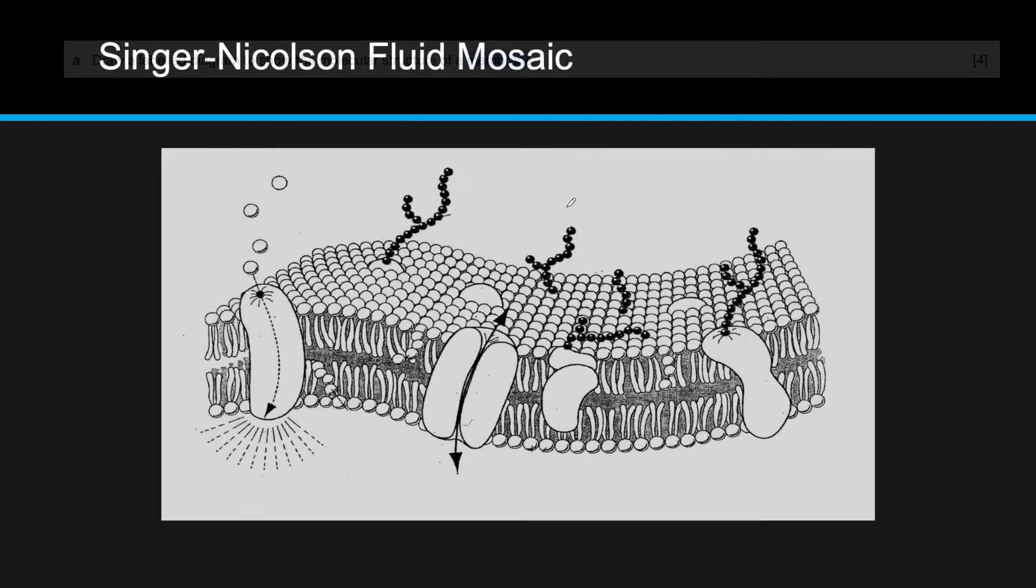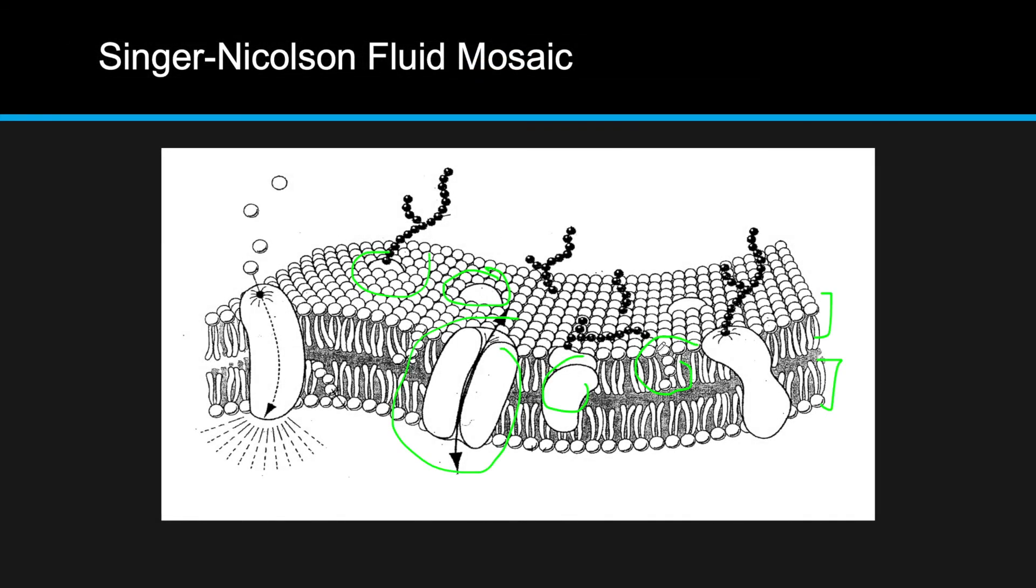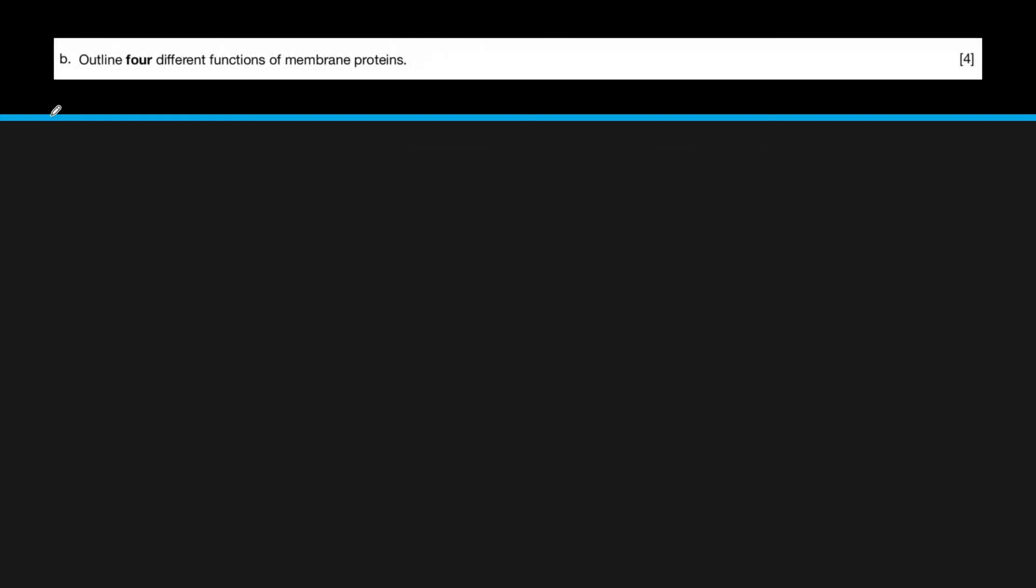You notice it's four marks, and if you have one, two, three, four, that's five things there, so you'll be good. Outline four different types of functions of membrane proteins. That goes back to the chart. If you remember JETRAT, you should be good.